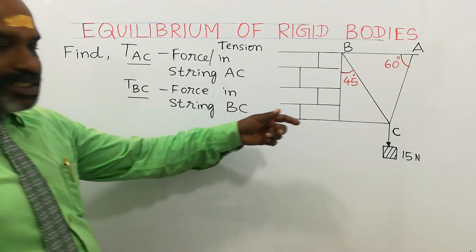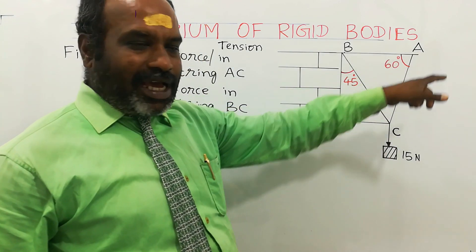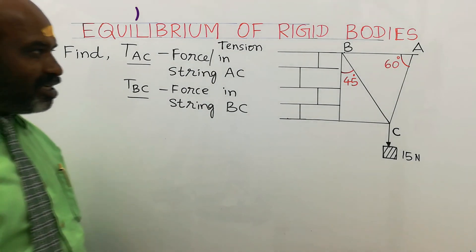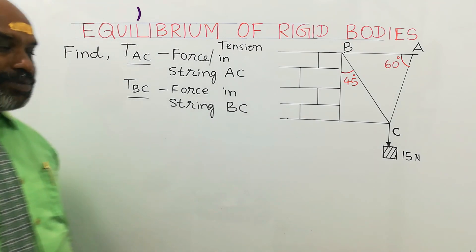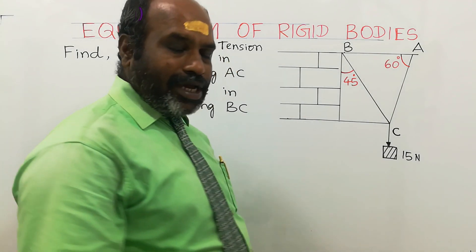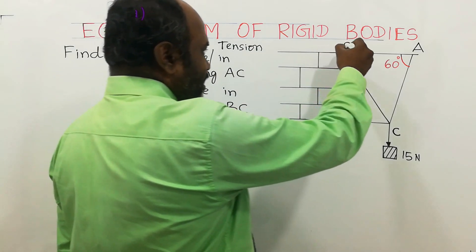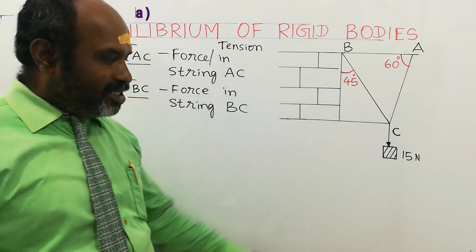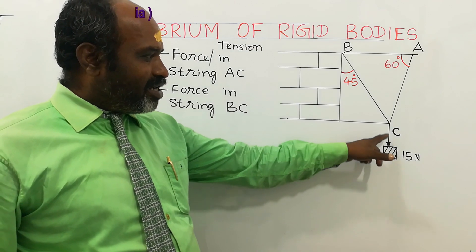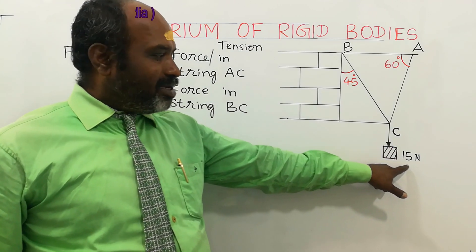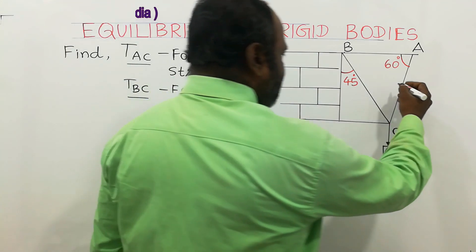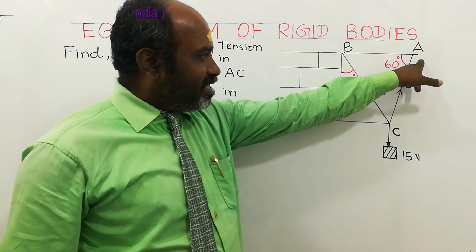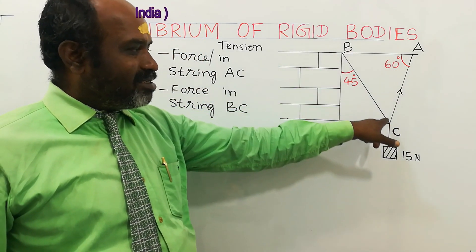In the string AC — this is a string called AC — it is an inelastic string having no elastic properties. That type of string does not have elastic property, so it can be considered as a steel wire. And TBC means a tension in the string BC, which is suspended by 15 Newton. This is a dead weight suspended at point C having 15 Newton. The tension will be acting in the string AC and the tension will be in the string BC.